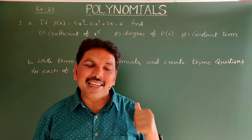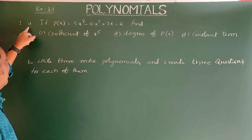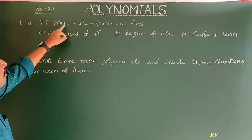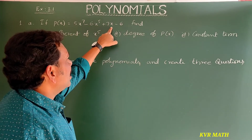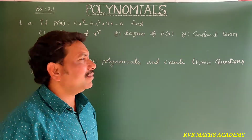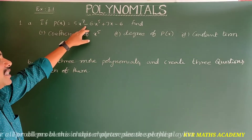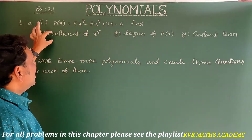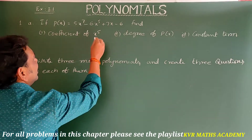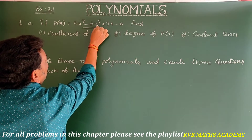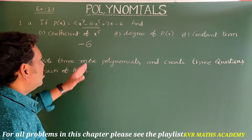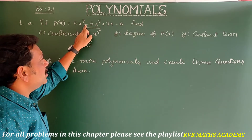Let's go through the first question in Exercise 3.1. Question (a): if p(x) = 5x⁷ - 6x⁵ + 7x - 6, find the coefficient of x⁵, the degree of p(x), and the constant term. Here, the coefficient of x⁵ — we should consider the sign too — so it is minus 6.